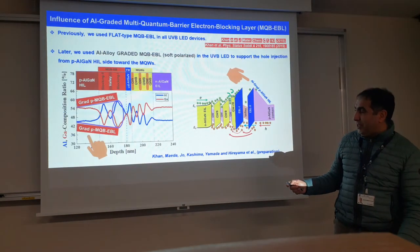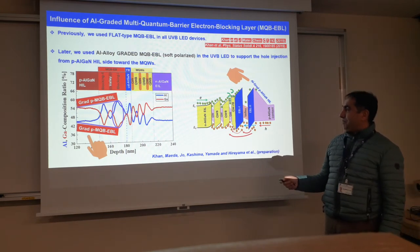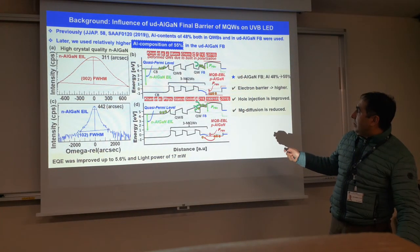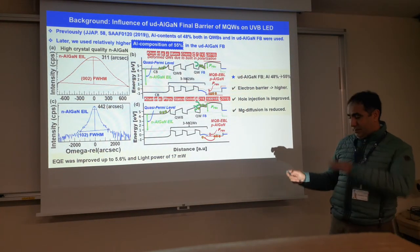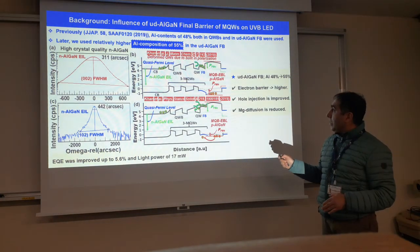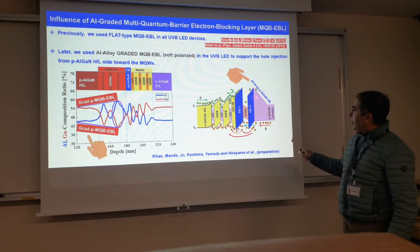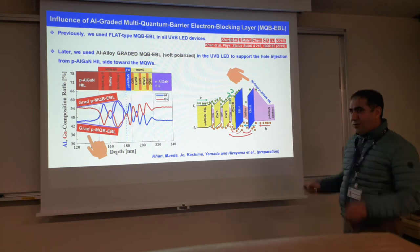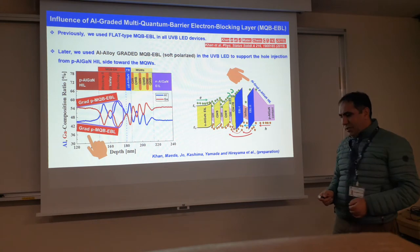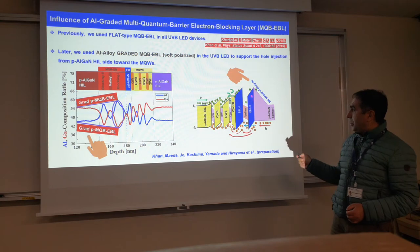We need higher power. Very recently, we introduced a new structure. Previously, as I told you, the electron blocking layer was flat — we used uniform aluminum composition in the P-AlGaN layer. But here we introduce a graded layer. We use distributed aluminum grading to realize polarization in the device structure — this new architecture.